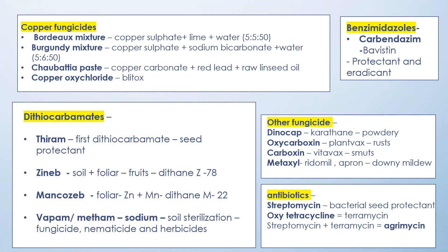Let's talk about copper fungicide. We will talk about Bordeaux mixture. The composition of Bordeaux mixture that you need to remember is copper sulfate plus lime plus water, and the ratio you have to remember is 5:5:50. This is a common exam question — one can ask the composition and one can ask the ratio.